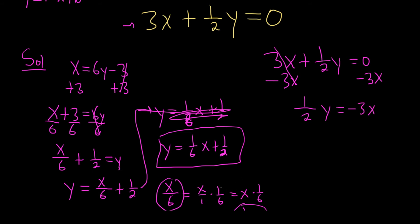To get rid of the 1 half, which is a fraction, we can multiply by 2. That will cancel it. So y equals negative 6x.